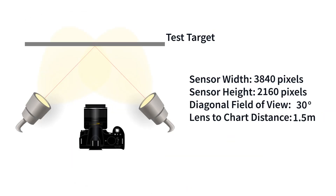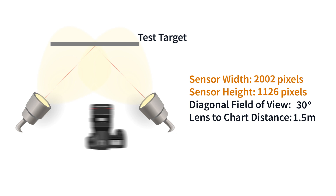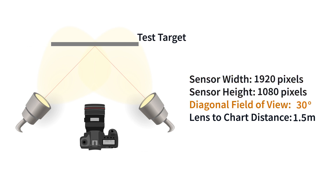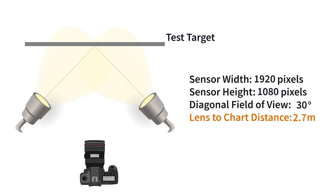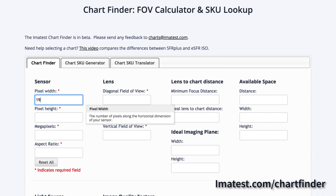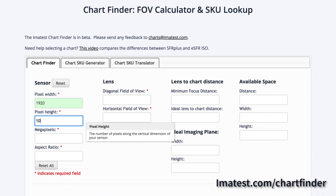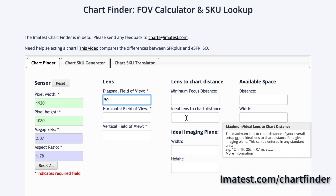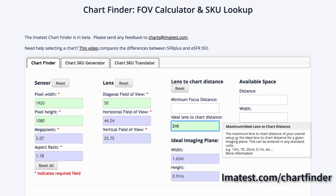To select an appropriate test chart size, you will need to know the pixel width and height of your sensor, the diagonal field of view of your lens, and your ideal lens-to-chart distance. Our chart finder can use this information to determine your ideal test chart size.